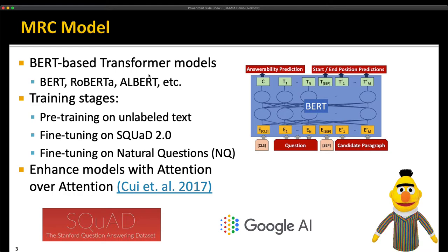In order to train this, we start with a pre-trained model on unlabeled text and then we fine-tune this on Stanford's question answering, or SQuAD dataset. We then further fine-tune this on Google's natural questions, or NQ dataset, to produce our final model. We also enhance the model's attentions with attention over attention from Cui et al. 2017.